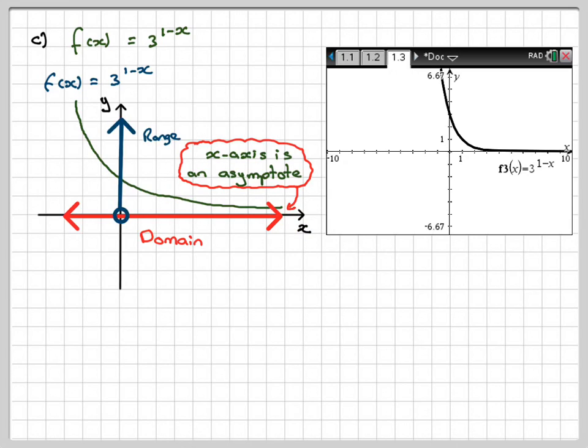So my domain will have to be an open box here, because it can't be equal to 0, and it can go on forevermore up the y-axis. So finally, the domain will be x belongs to R, and the range will be f(x) is greater than 0, but not equal to it. Thank you very much for watching.